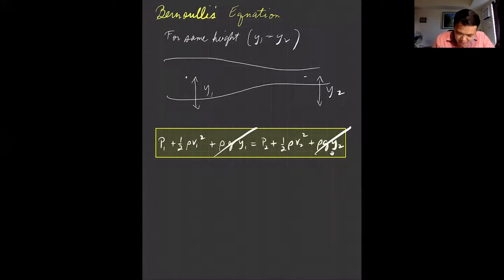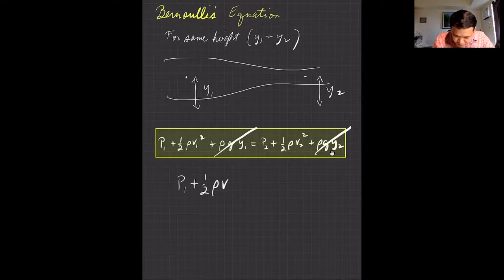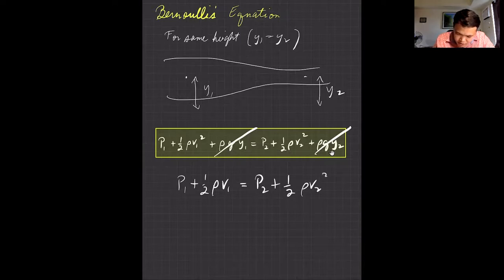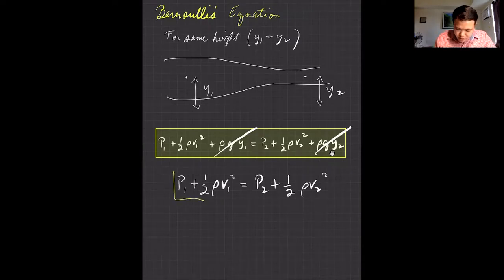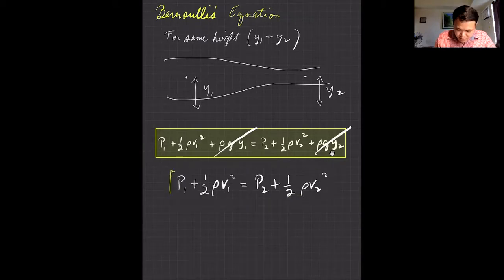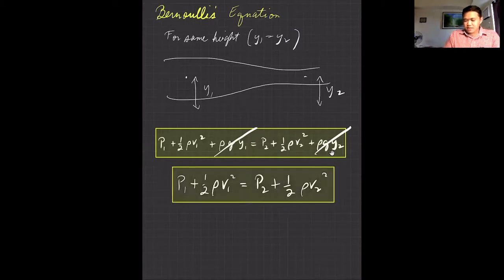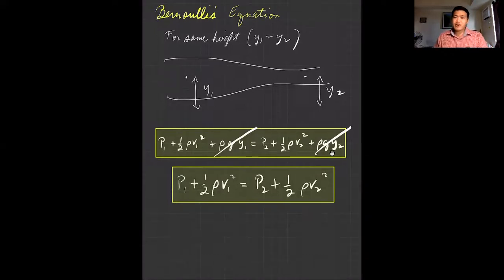So our simplified Bernoulli's equation becomes: p1 plus one-half rho v1 squared equals p2 plus one-half rho v2 squared. This is Bernoulli's equation at the same horizontal level — let me box that, it's very important. These terms are constant throughout, meaning they are equal at both points.